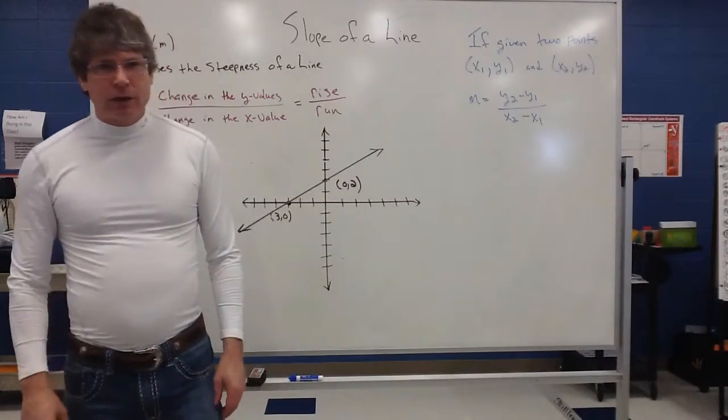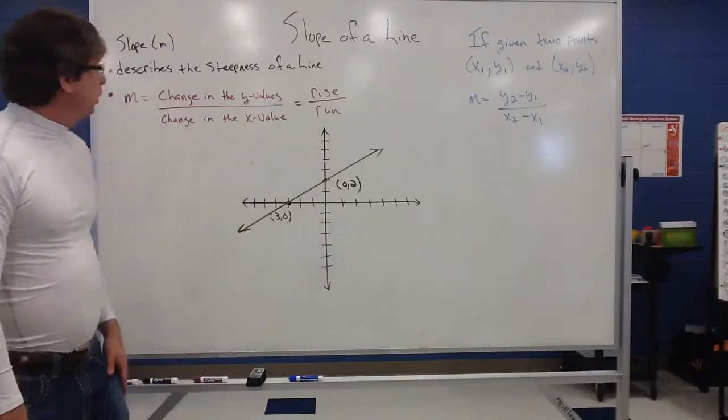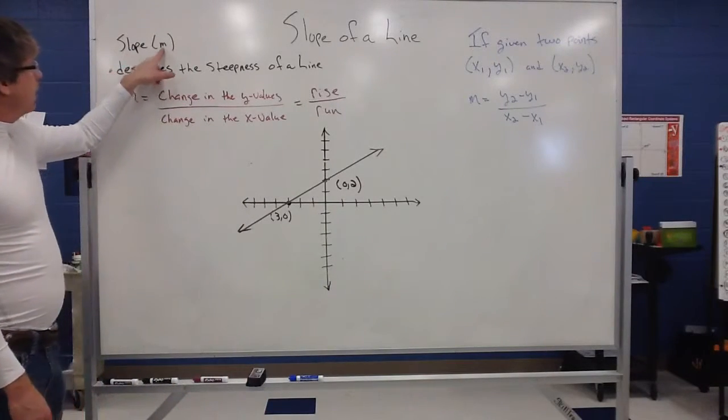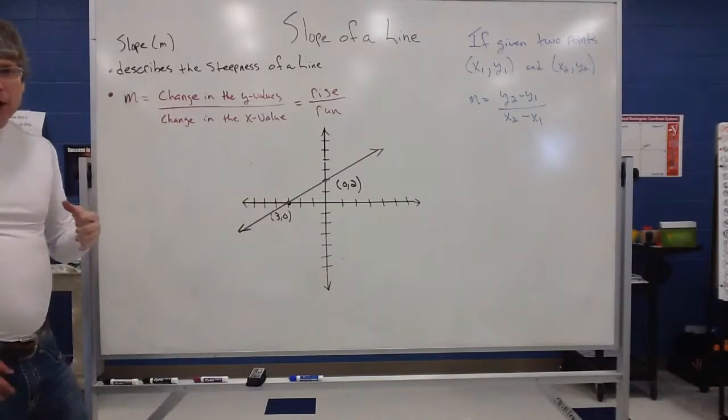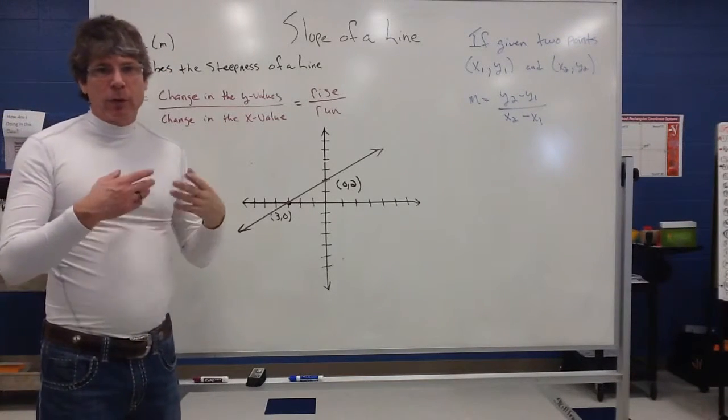I kind of hinted on it in our last video when I talked about steepness. So, slope, a lot of times it's denoted by the letter M in algebra. So if you see that letter M, a lot of times it's going to refer to the slope of the line.